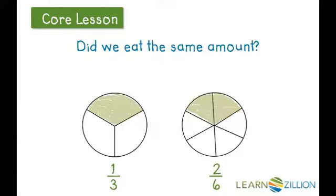If you said yes, you are right. As you can see, one-third and two-sixths represent the same amount of pie. One-third and two-sixths are equivalent fractions because they both represent the same amount of space.